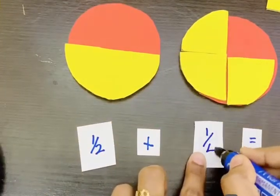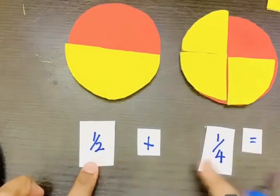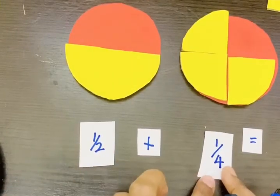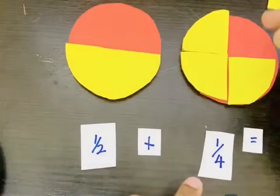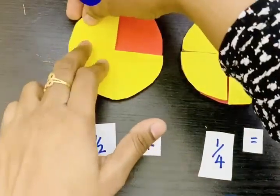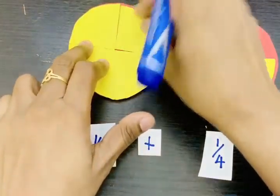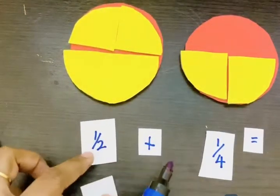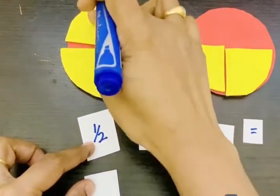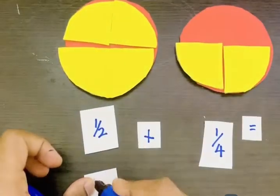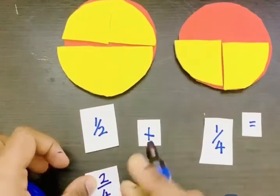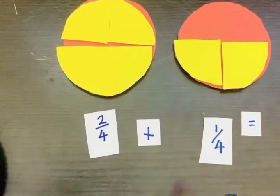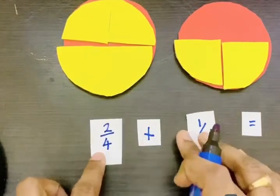Here the denominators are different, that is 2 and 4, so we choose 4 for both. Let us check the equivalent fraction for 1 by 2. It is 2 by 4. Now the denominators are the same.